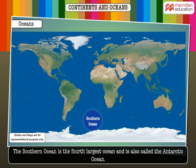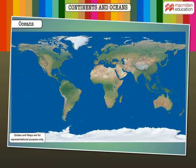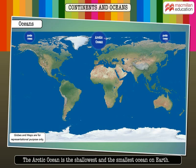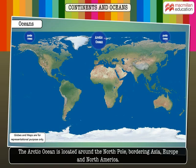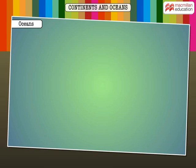The Southern Ocean is the fourth largest and is also called the Antarctic Ocean. It borders Antarctica. The Arctic Ocean is the shallowest and the smallest ocean on Earth. It is located around the North Pole, bordering Asia, Europe, and North America.